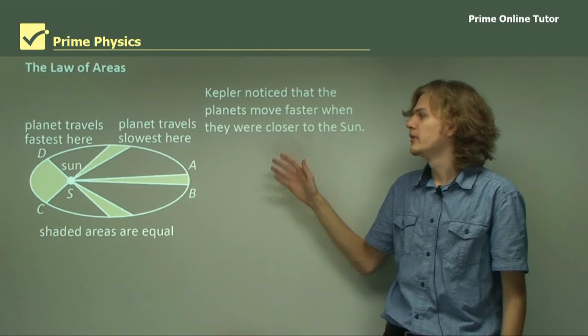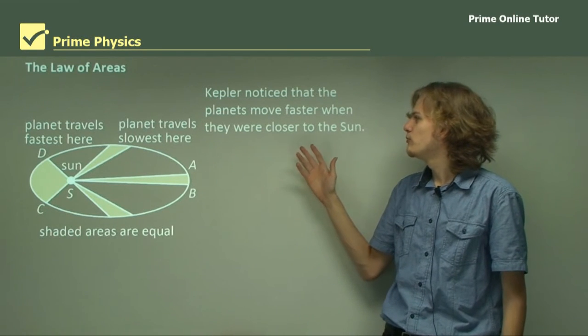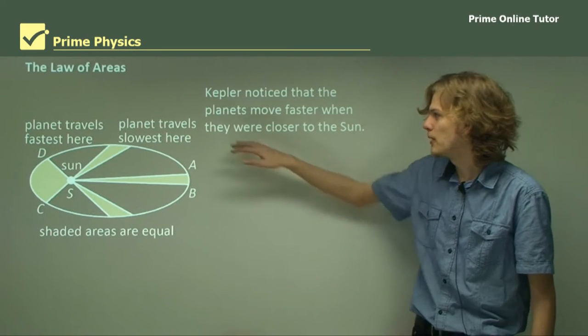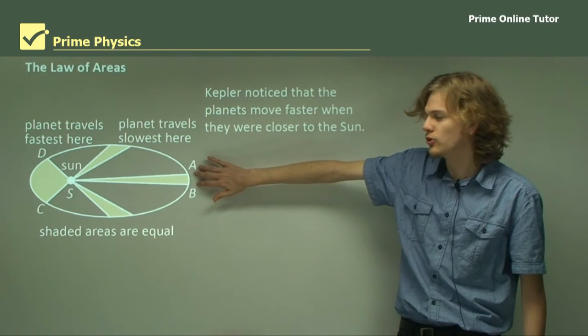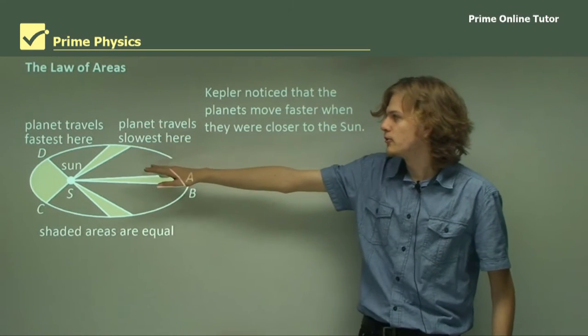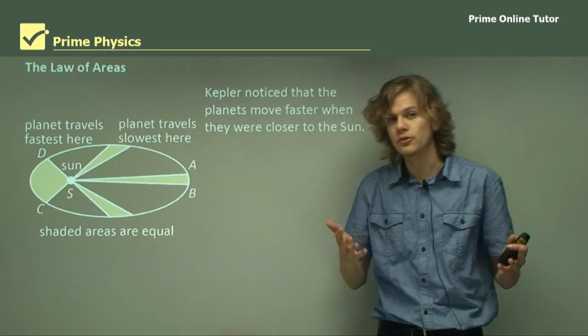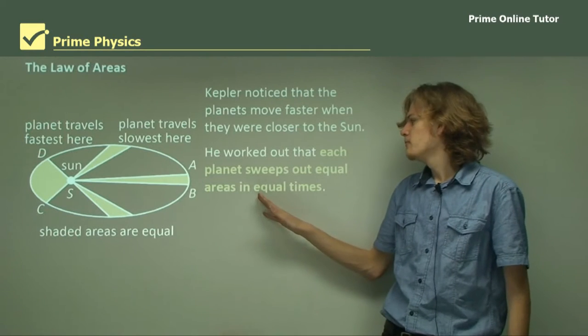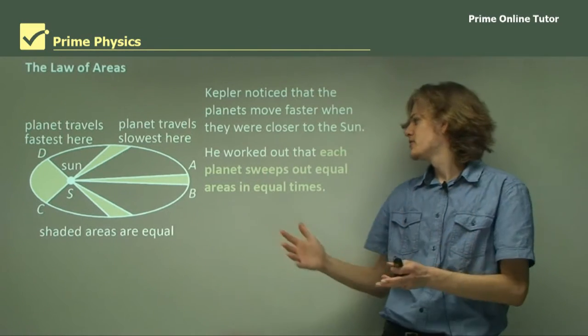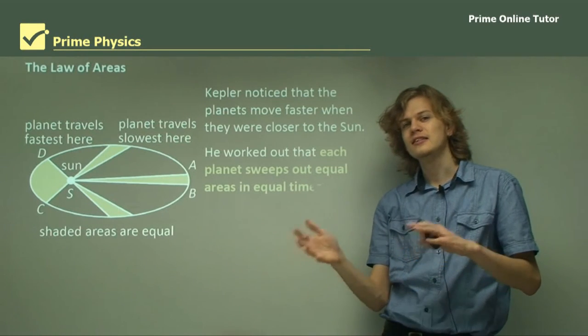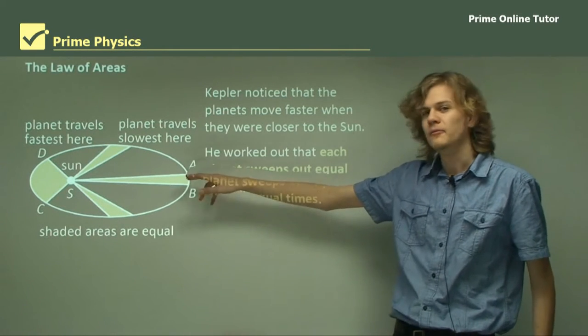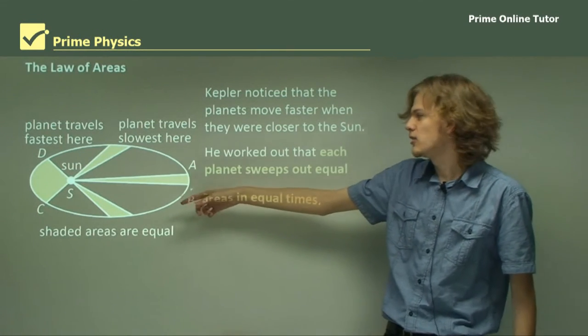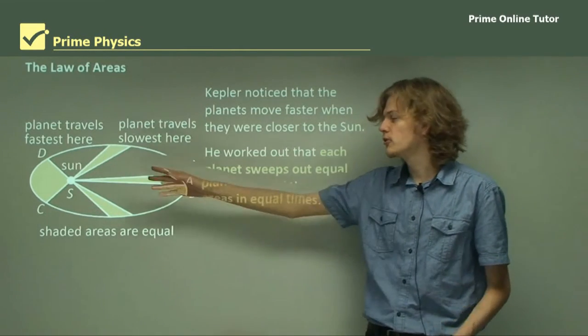The second law is the law of areas. Kepler noticed that the planets move faster when they were closer to the sun. We can see in this picture here, the planet travels slowest at this end, when it's the furthest distance from the sun, and the planet travels fastest here at this end, when it's closest to the sun.